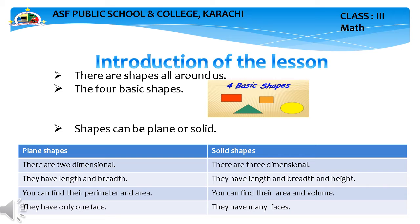Plain shape aur solid shape mein difference kya hai aur aap kis tarah se identify kar saktay ho? Plain shapes are two dimensional — yarni plain shape mein two dimensional hotay hain. Jabke solid shape there are three dimensional. They have length and breadth — plain shape ki length aur breadth hoti hai, lumbai aur chadai. Solid shapes have length, breadth and height. You can find their perimeter and area — aap plain shape ka perimeter bhi maalum kar saktay aur area bhi.